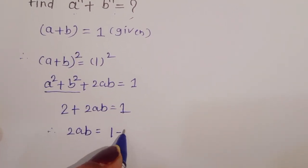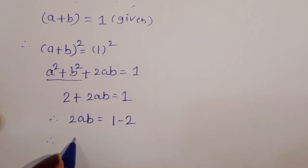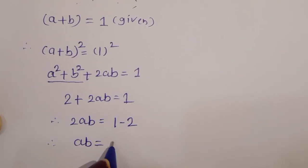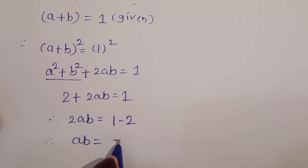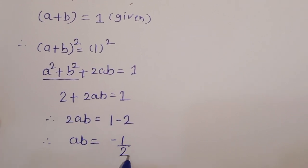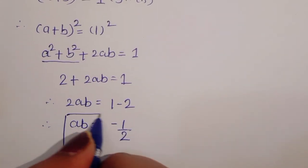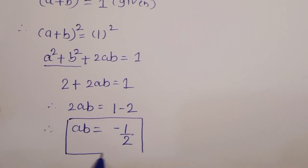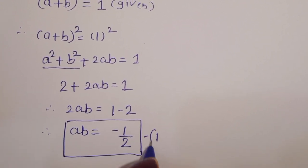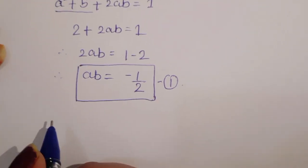Therefore 2ab is equal to 1 minus 2, so ab is equal to minus 1 upon 2. This is the value of ab — equation 1.